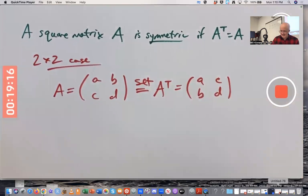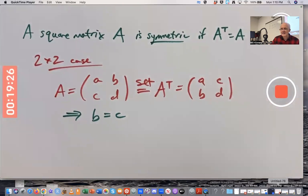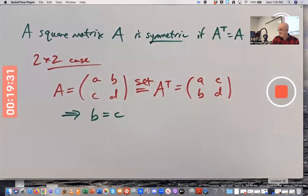B must equal c. In the 2 by 2 case, a matrix is going to be symmetric if B equals c. A and D can be anything.